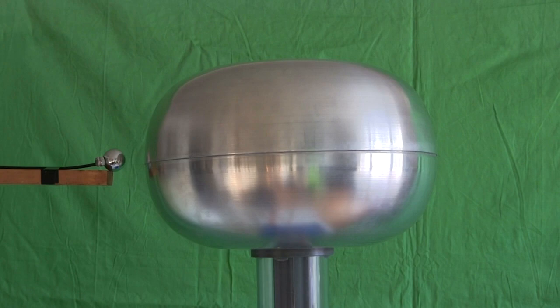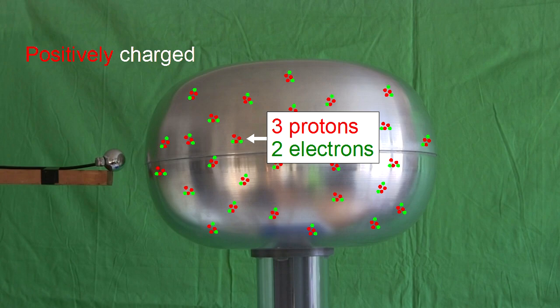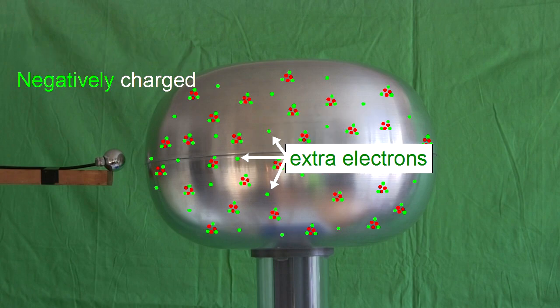The top dome of a Van de Graaff generator is either positively charged or negatively charged. That means it either has more protons than electrons making it positively charged or more electrons than protons making it negatively charged. The key point is that it's kept that way.